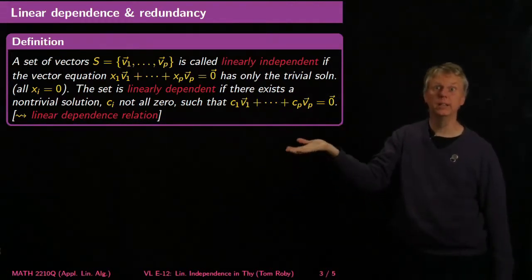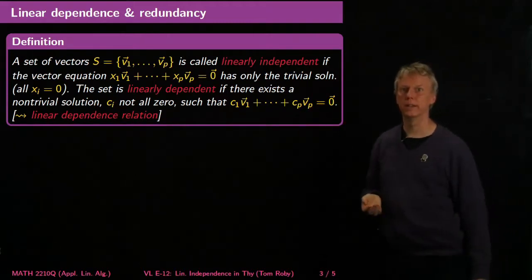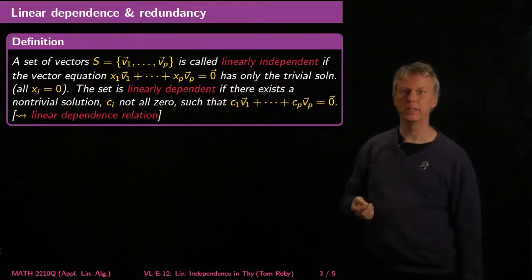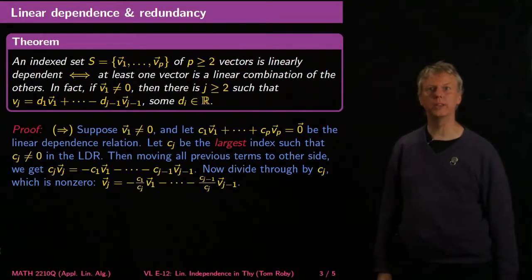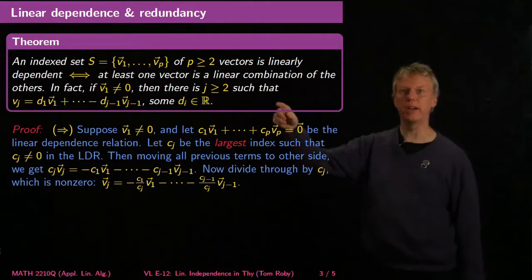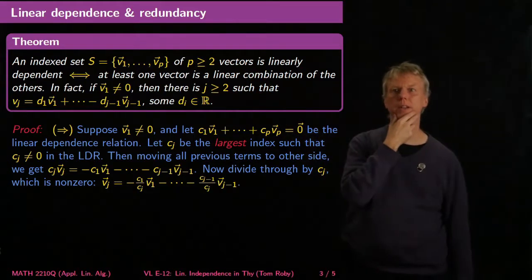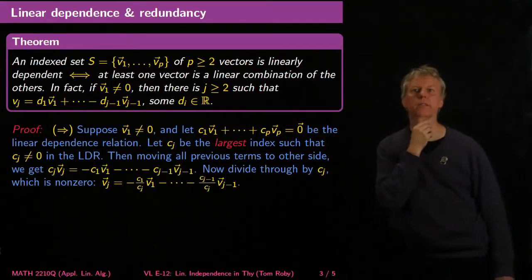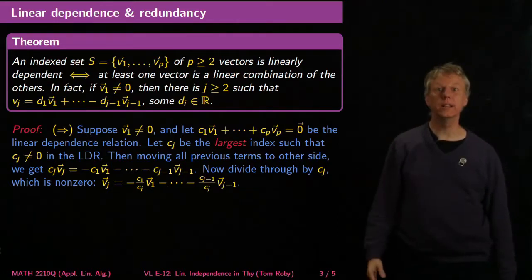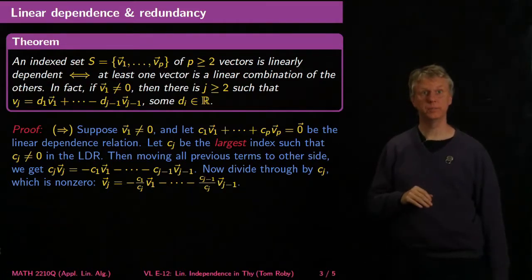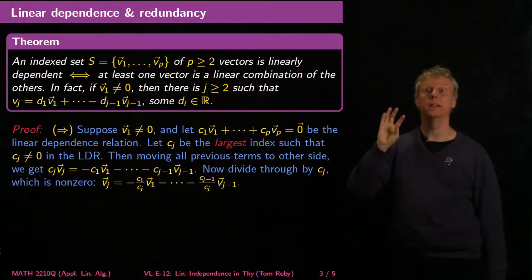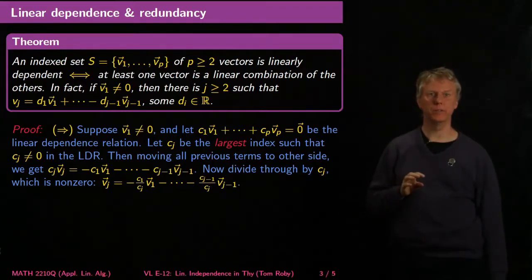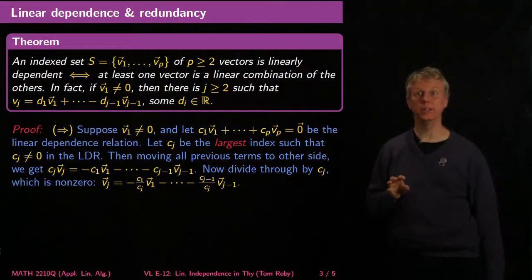The set of vectors is either linearly dependent or independent. If it's linearly dependent, then we can write down a linear dependence relation. The theorem states that if I've got a set of at least two vectors, then it's linearly dependent if and only if at least one vector is a linear combination of the others. So at least one vector being a linear combination of the others means that set must be linearly dependent.